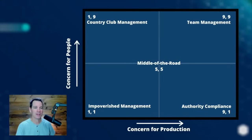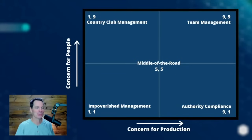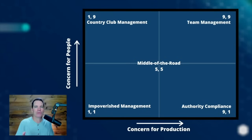The lowest box is called the impoverished management style — where there's really no active attempt to influence outcomes, very little hands-on attention in any way. At the bottom right is authority compliance — a high score of nine on production but very low concern for people, where people are seen basically as a resource to get the job done. Right in the middle is the middle-of-the-road management style, showing an adequate level of concern for both production and people, but yielding mediocre results. And then there's the country club manager — top left — with high concern for people and attention to building a positive work environment, but not emphasizing tasks very much.